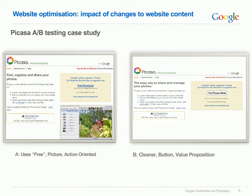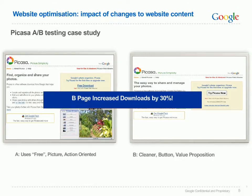So which page do you think was the best performing? In actual fact, page B was the winner with an observed conversion improvement of 30%. How did we discover that this new page performed better than the old one? Did we ask the marketing team? Did we ask our CEO? No. We let our website visitors decide.